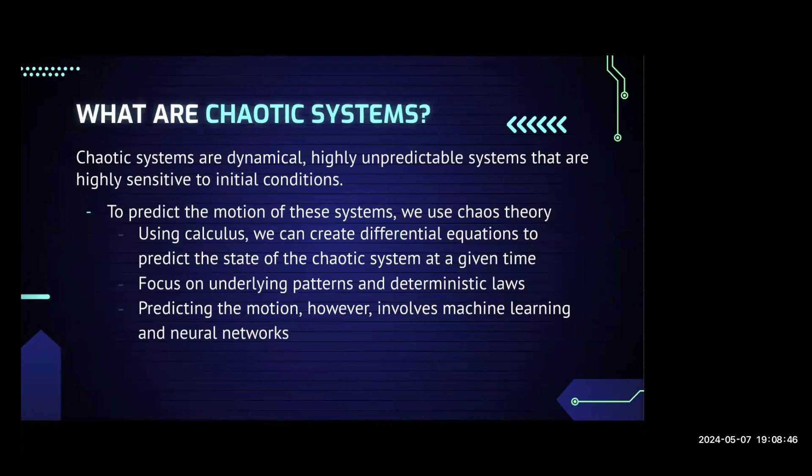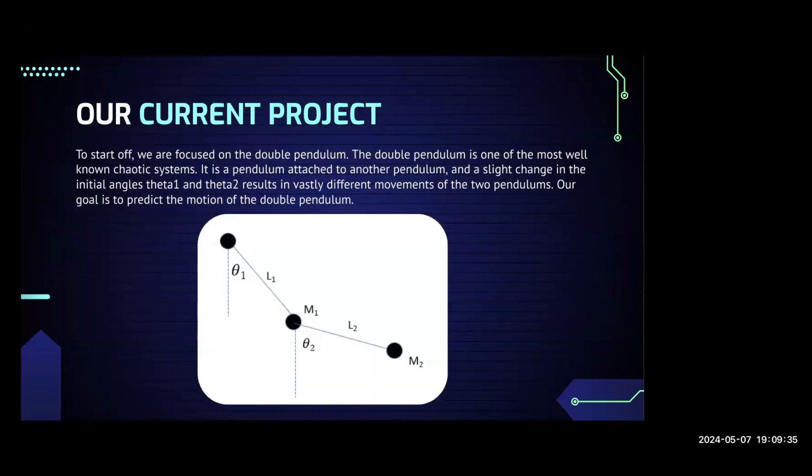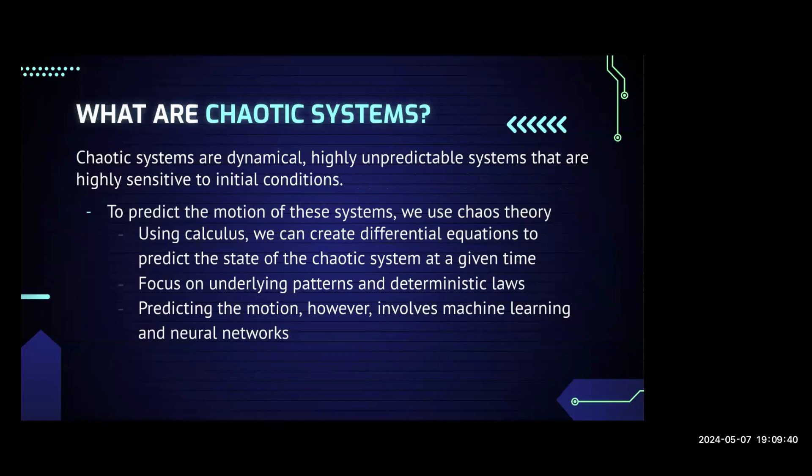Chaotic systems are dynamic, extremely complex, and unpredictable systems that are highly sensitive to initial conditions. As our project focuses on predicting the trajectories or oscillations of these systems, we need to use calculus to come up with differential equations that can help us predict the state of a chaotic system at a given time. Once we have the differential equations, we need to solve them using a separation-of-variables technique called Runge-Kutta-Fourth method to get the position of the chaotic system. However, predicting the actual motion requires putting the position data into a machine learning model or neural network. We also need to focus on the underlying patterns and deterministic laws from our research.